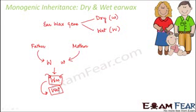Dry earwax is mostly found in Asians and Native Americans. This was an example to show that the pattern of inheritance of dry and wet earwax follows purely the Mendelian pattern of inheritance — one such example in human beings.